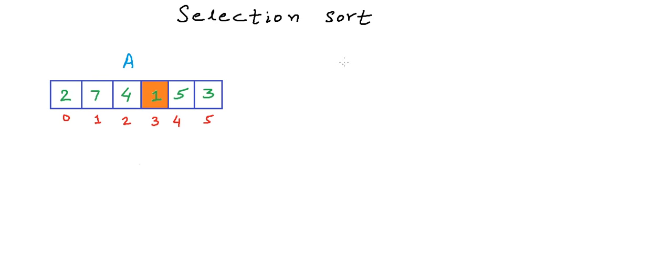Because that's where 1 belongs. It belongs to 0th index. So, 1 goes to the 0th index and 2 comes to index 3. Now, we need to look for the next minimum and 1 need not be considered. And if you see, it's pretty easy now. We can scan all the elements from 1 to 5 in order to find the second minimum.